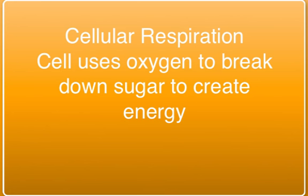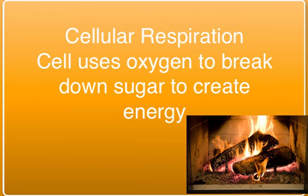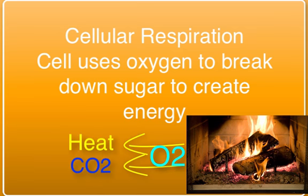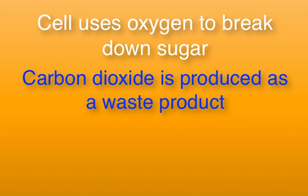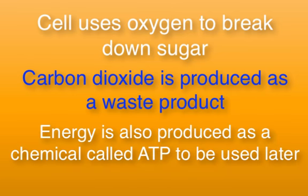Breaking down sugar produces the energy your body needs. This is very similar to wood burning in a fire. As the wood burns, it combines with oxygen and releases heat energy and carbon dioxide. When the cell uses oxygen to break down sugar, oxygen is used and carbon dioxide is produced, and energy is produced as well. But instead of heat energy, much of the energy produced in cellular respiration is stored chemically for the cell to use later.